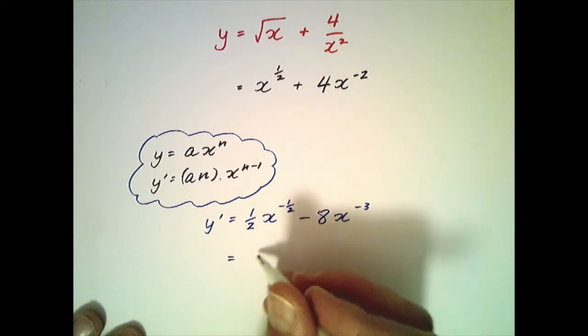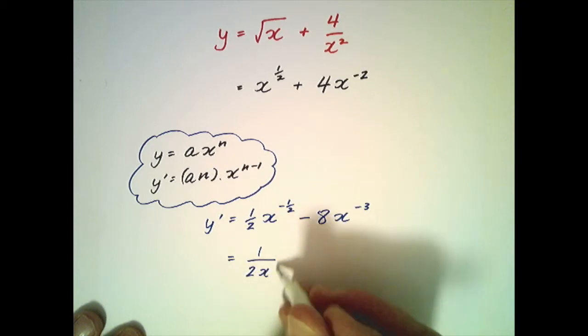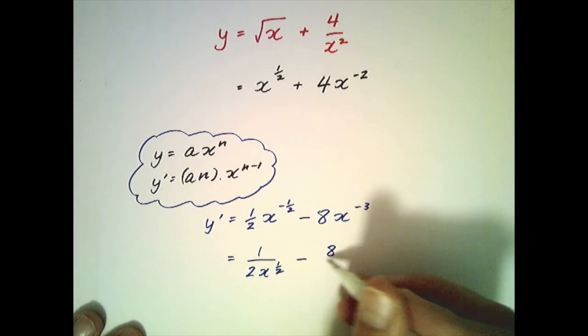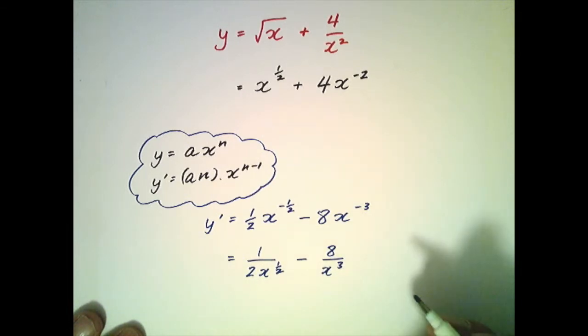So what we'll do is we'll first of all make this 1 over 2x to the positive a half, and here we'll go 8 over x to the positive 3, so now we've made the indices such that they're positive.